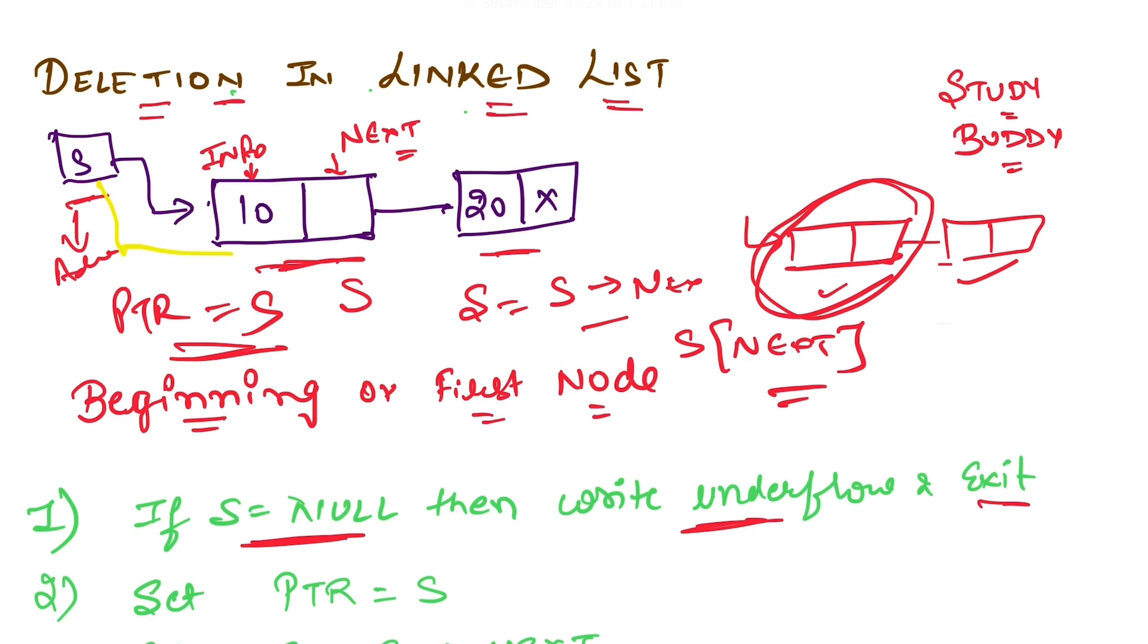And a new link will establish with the second node. We are establishing a link of this pointer. The basis of this algorithm is this much only - we have to directly join this node, first node, s pointer.